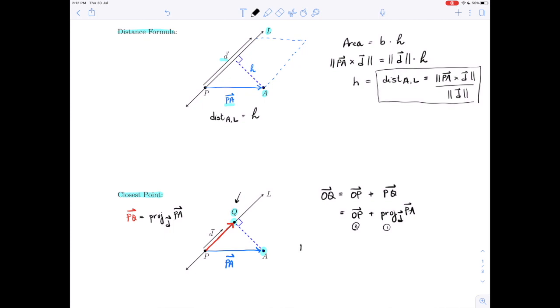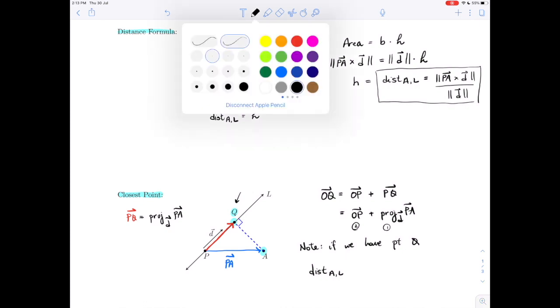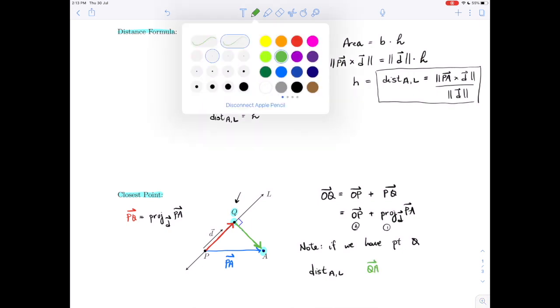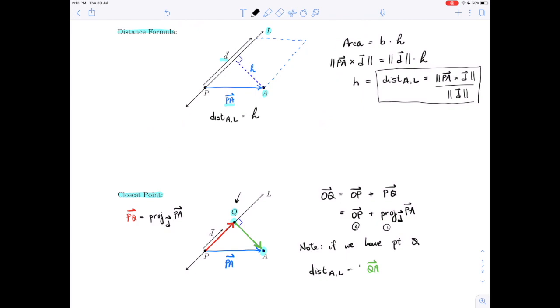Now, a little something to note. If we have done this, so if we have point Q, then that actually lets us do the distance formula or calculate the distance in a different way. The distance from A to the line is the distance from point Q to A. And if I write that as a vector, that's vector QA. If I want the distance, then I'm talking about the norm of that vector. So the distance, if you have point Q, the distance can be calculated from A to the line as the norm of vector QA.